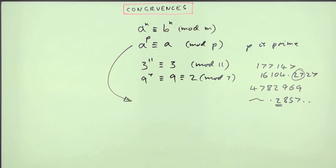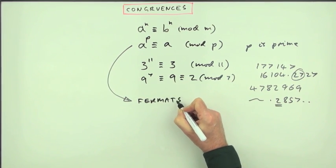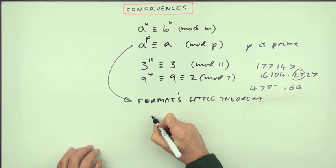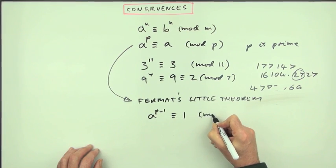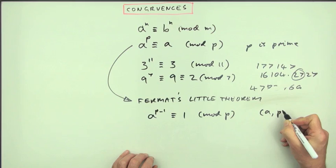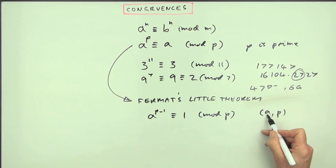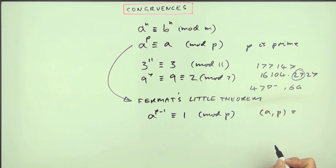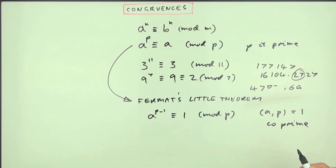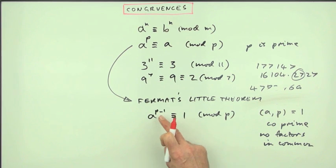Now from this, the statement that's known as Fermat's Little Theorem is a to the p minus 1 is congruent to 1 mod p, where a and p are co-prime. This little bracket here stands for the highest common factor of the numbers a and p. And if they're co-prime, they don't share any factors. So the highest common factor should be 1. That means that a to the p minus 1 should be congruent to 1 mod p. That's Fermat's Little Theorem which can be useful in some problem solving.